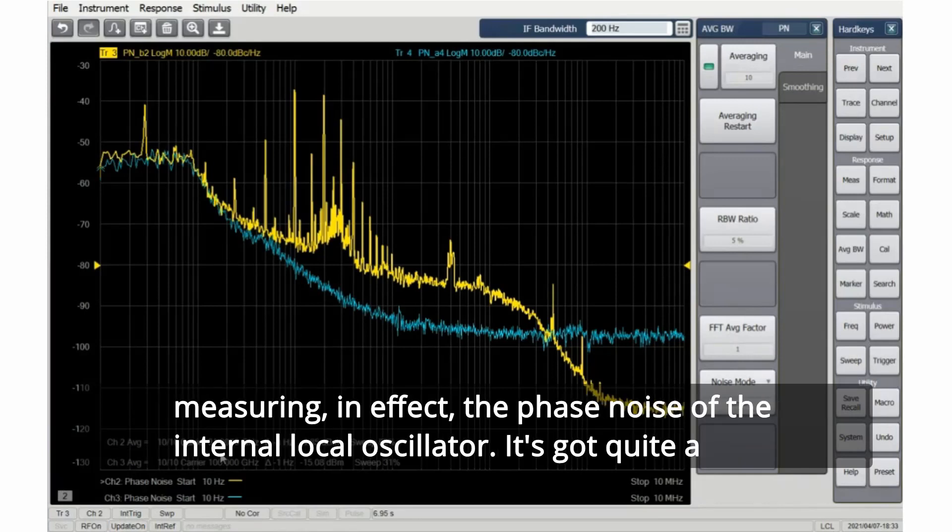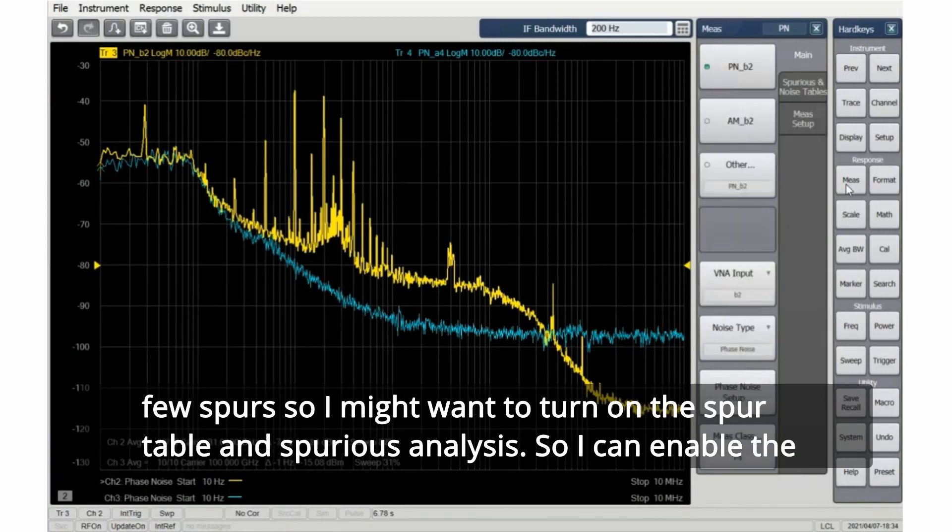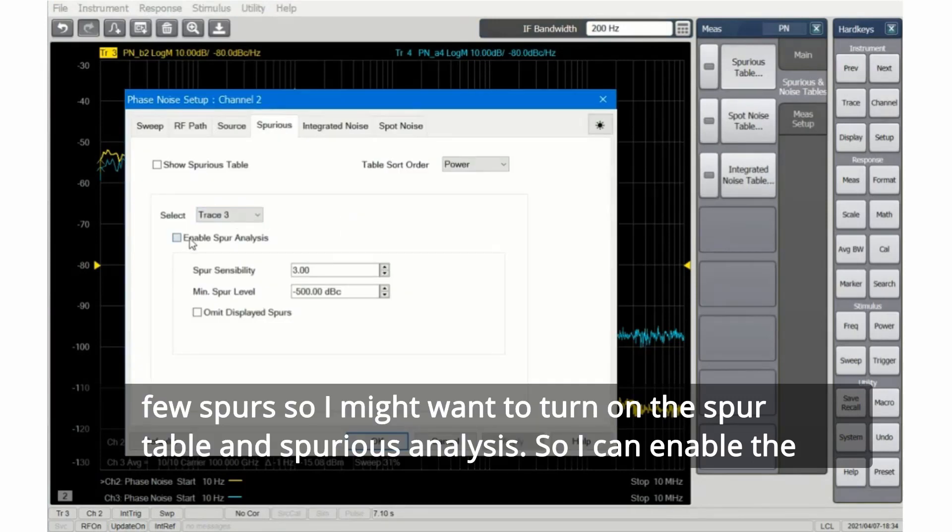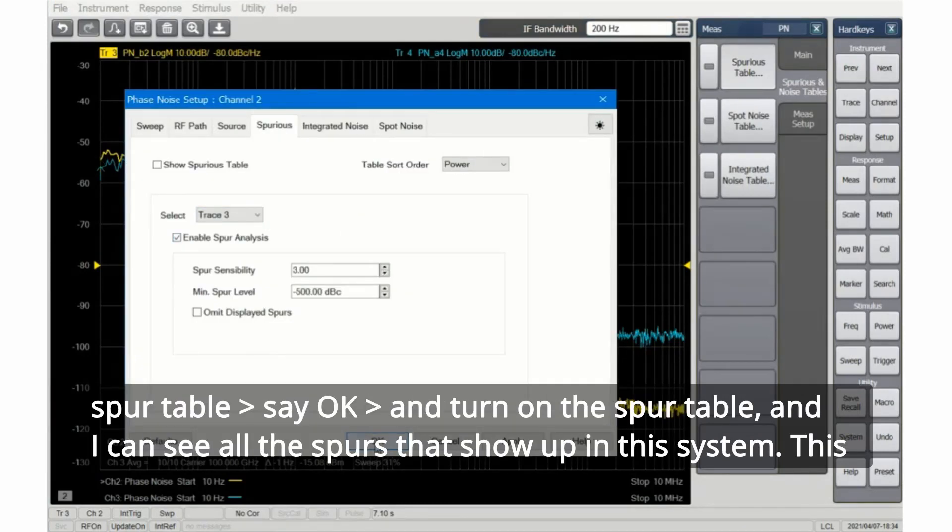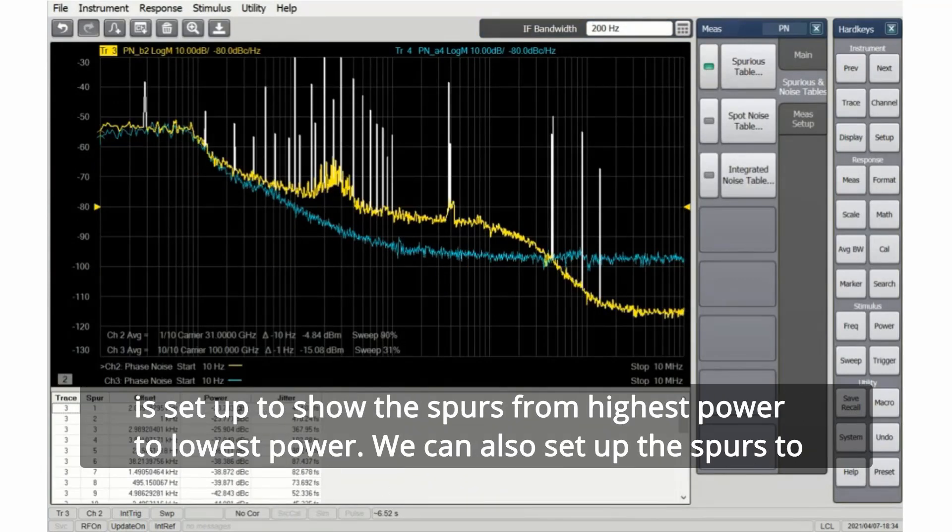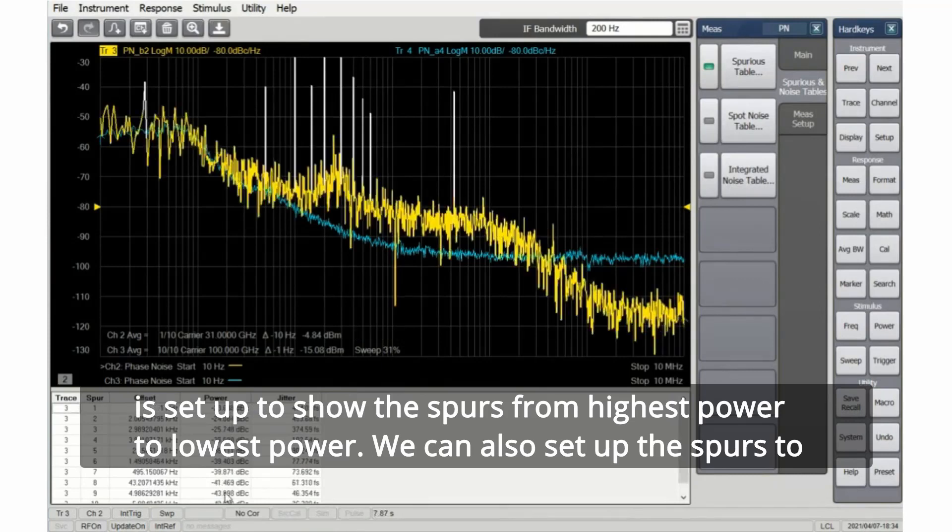It's got quite a few spurs, so I might want to turn on the spur table and spurious analysis. I can enable the spur table and turn it on to see all the spurs that show up in this system. This is set up to show the spurs from highest power to lowest power. We can also set up the spurs to show from lowest frequency to highest frequency.